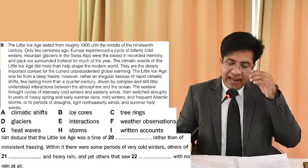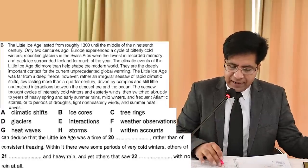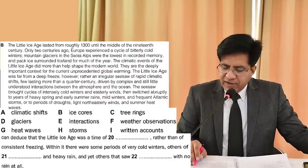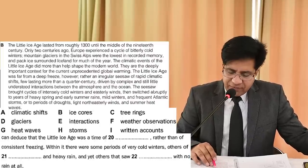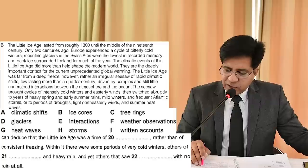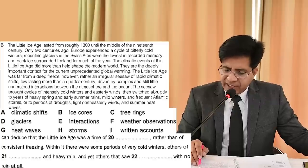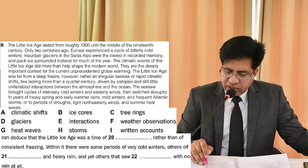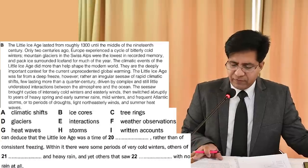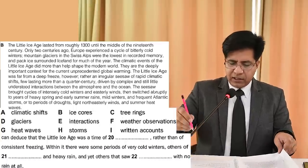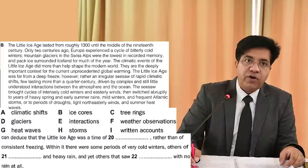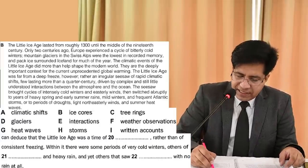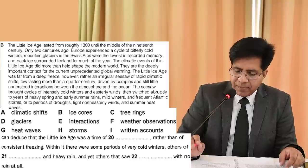Reading on: 'years of heavy spring and early summer rains, mild winters, frequent Atlantic storms' — then periods of droughts, light winds, and summer heat waves. For question 21, the answer relates to heavy rains — so the answer is H (storms). Cross off H as it is now used.